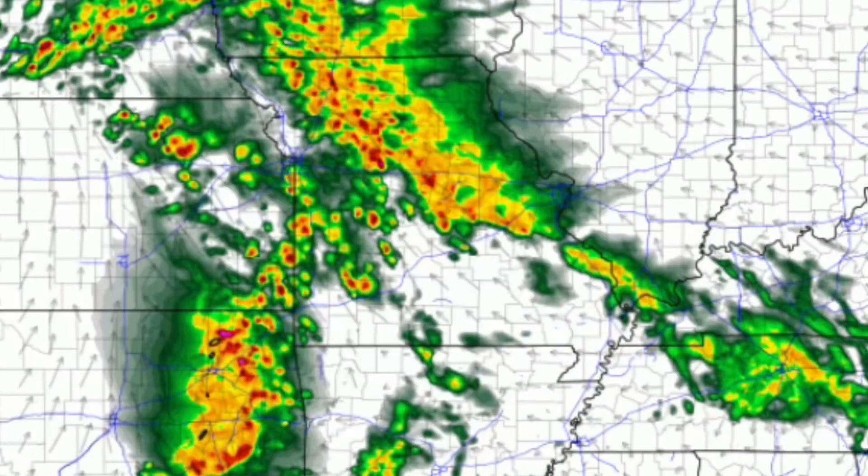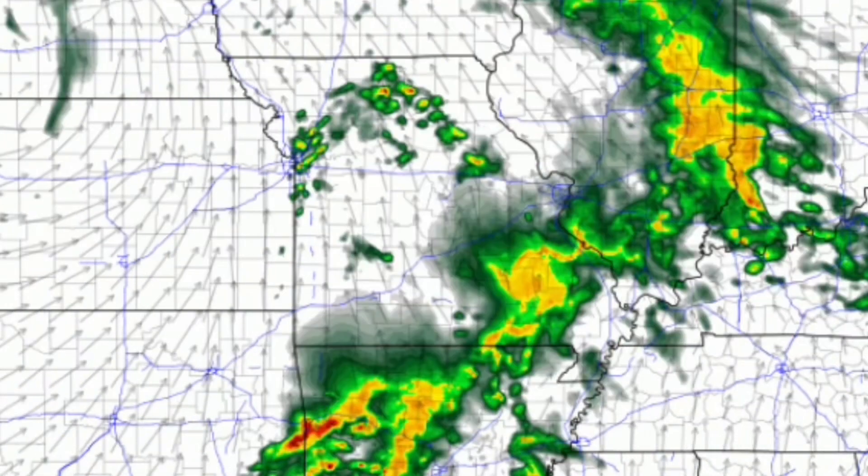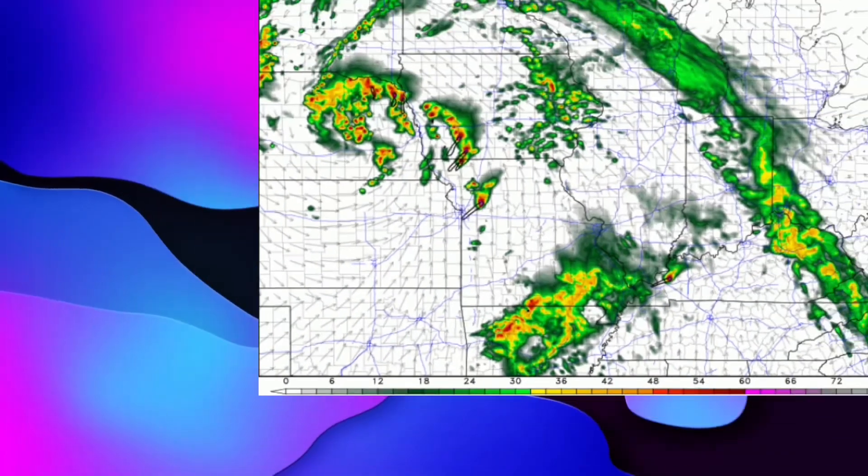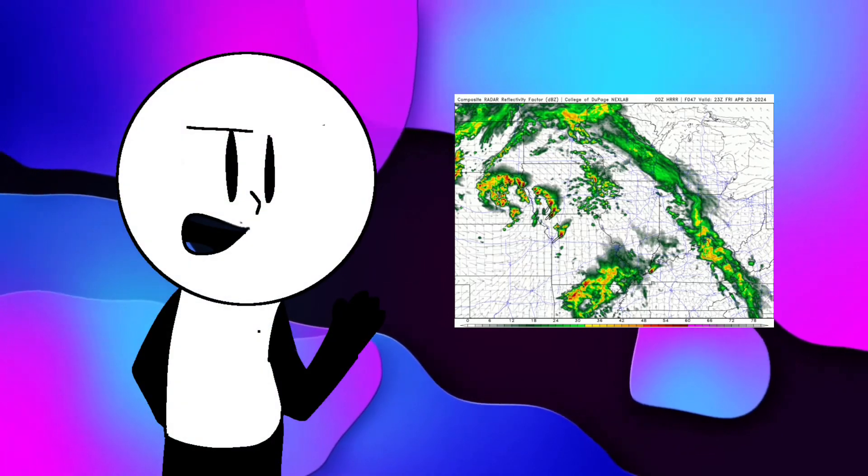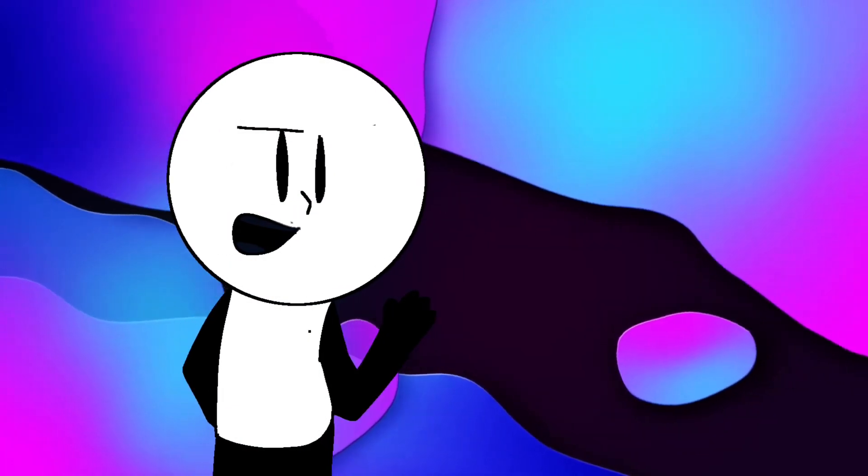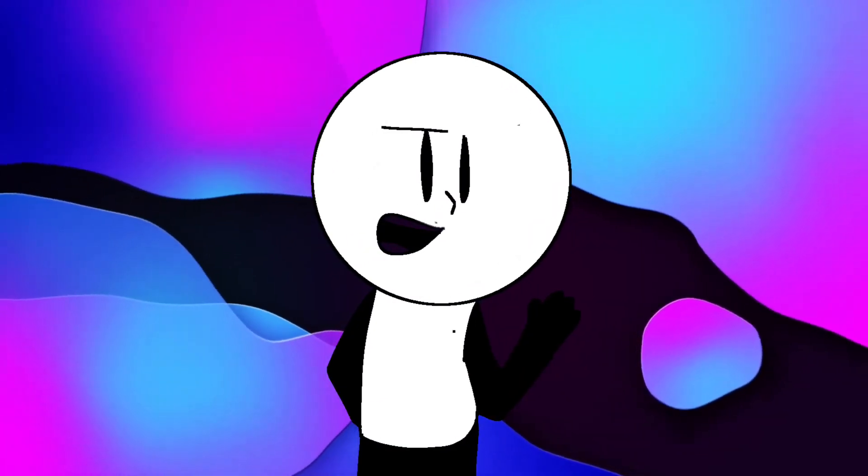In the southern region, a few semi-discrete supercell thunderstorms can initiate within the warm sector. Models demonstrate a more linear mode after storms initiate. This will result in more of a damaging wind and large hail threat. However, a few tornadoes cannot be ruled out.